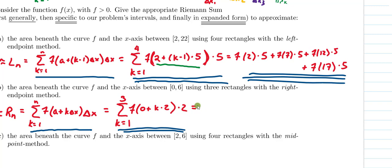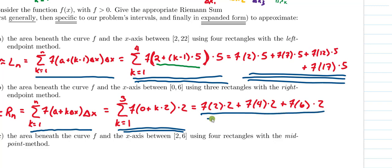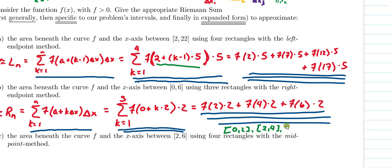Expanding this out: when k equals 1, we get f of (0 plus 1 times 2) = f(2) times 2. When k equals 2, we get f of (0 plus 2 times 2) = f(4) times 2. When k equals 3, we get f of (0 plus 3 times 2) = f(6) times 2. To verify: my intervals are 0 to 2, 2 to 4, and 4 to 6 — and using a plus k delta x ensured I got the right endpoints of each interval.